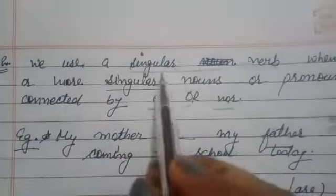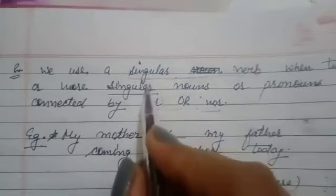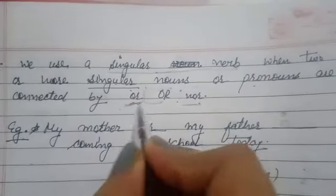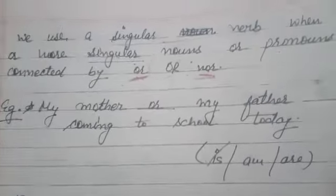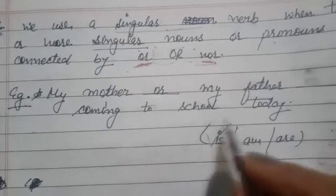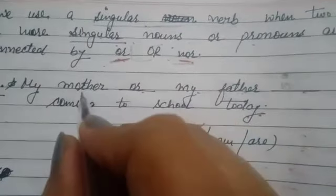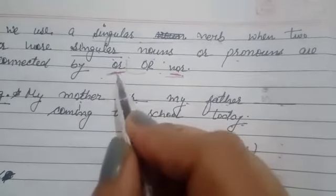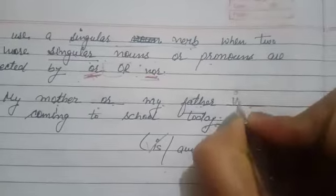Rule 2: We use a singular verb when two or more singular nouns or pronouns are connected by 'or' or 'nor'. When two or more singular nouns or pronouns are joined by 'or' or 'nor', we use a singular verb. Example: 'My mother or my father ___ coming to school today.' Either mother or father — only one — is coming, so: 'My father or my mother is coming to school today.'